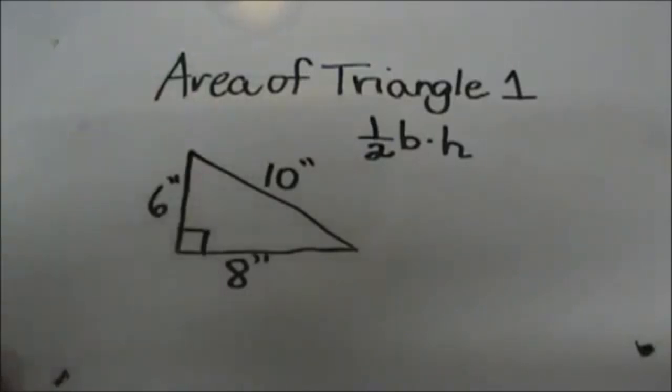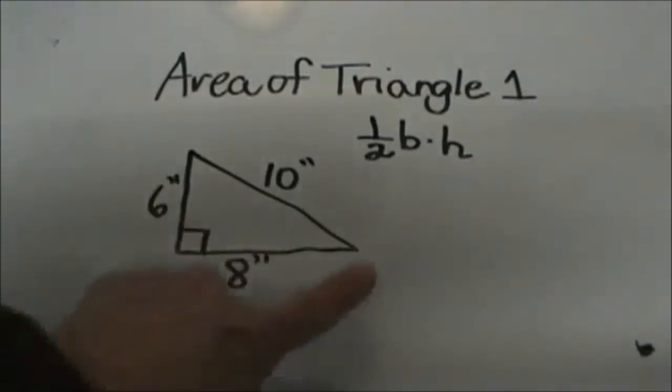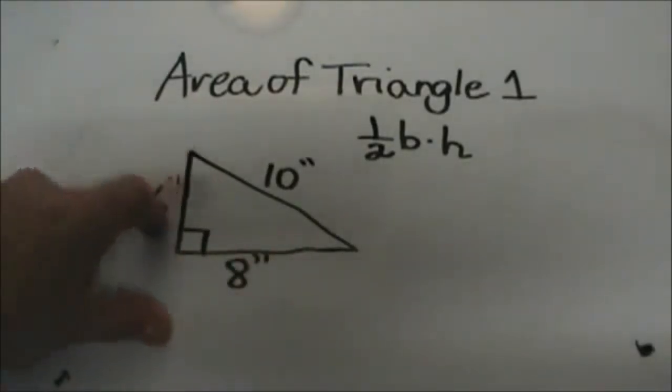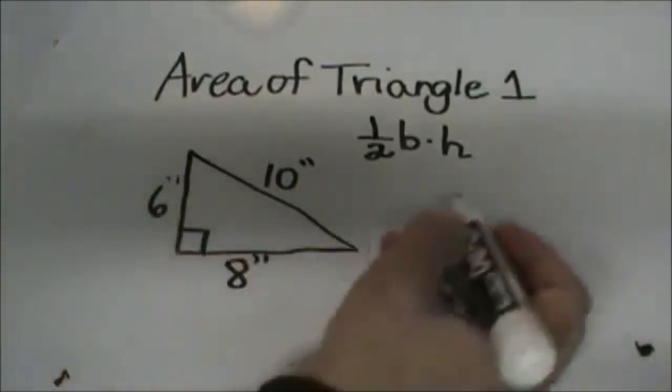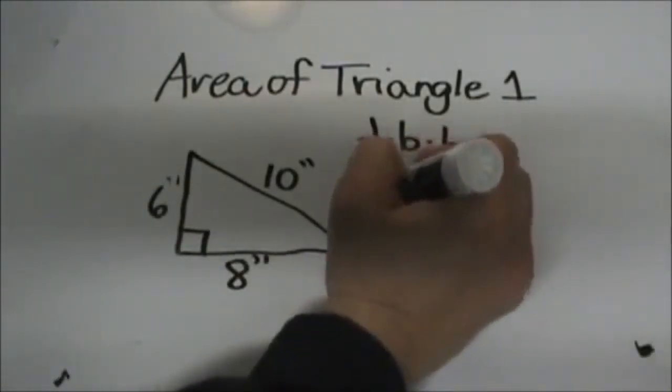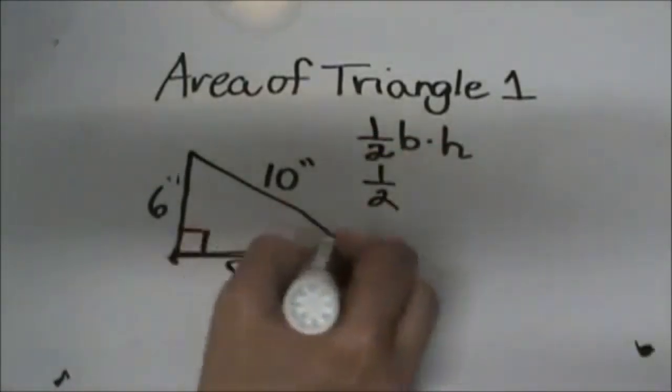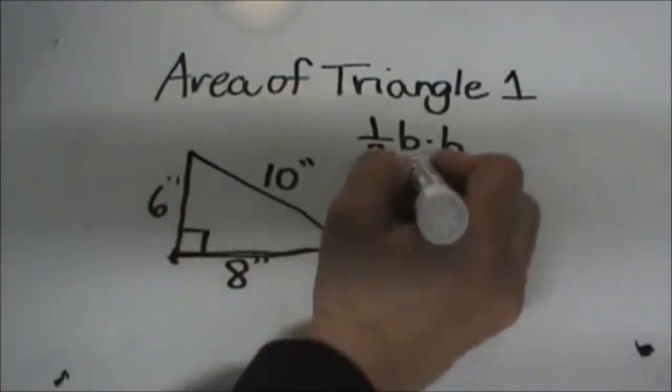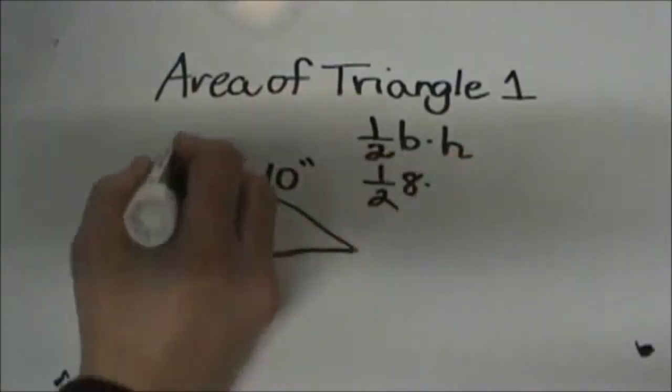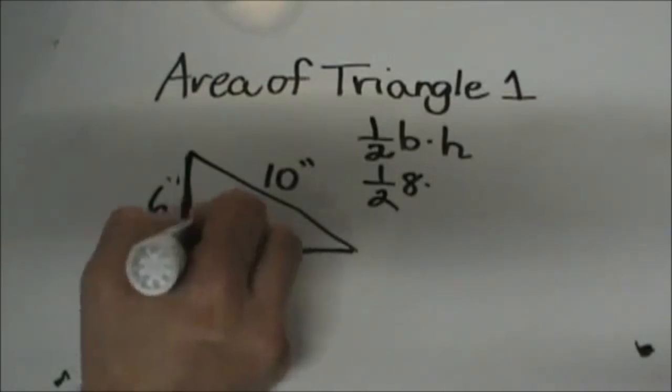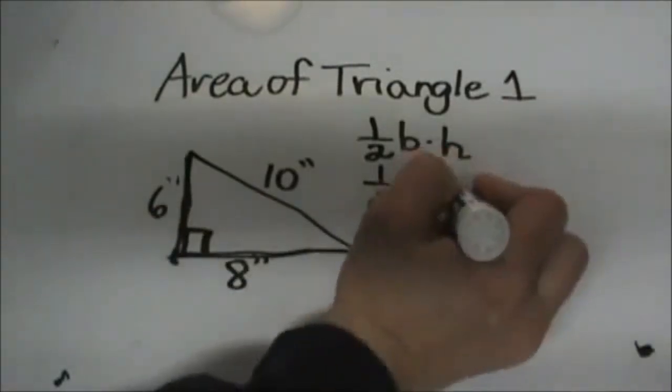In a right triangle it's very easy. The two legs are your base and your height. We're going to plug in 8 for the base because that's the length of the left to right side, and then the height, the up and down height since it's perpendicular, is 6.